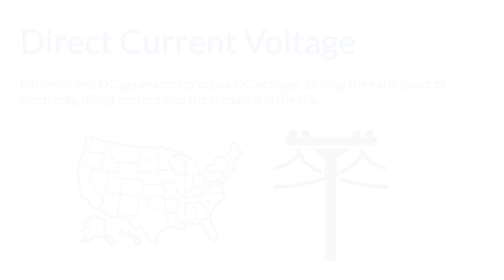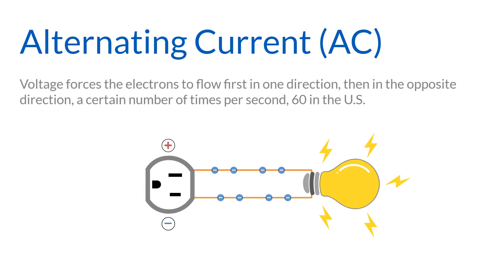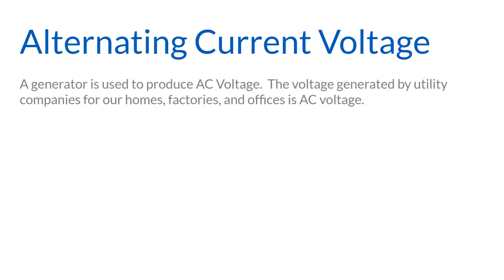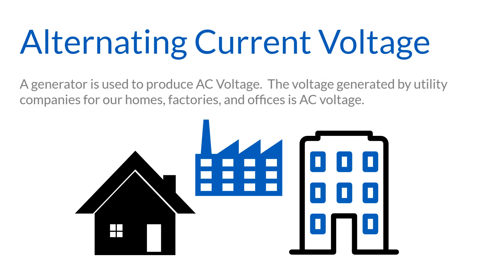For that, we use alternating current or AC. With this method, voltage forces electrons to flow first in one direction and then in the opposite direction a certain number of times per second — 60 Hz here in the US. This type of voltage is called alternating current or AC voltage. A generator is used to produce AC voltage. The voltage generated by utility companies for our homes, factories, and offices is AC voltage.